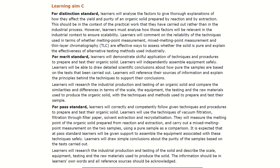The layout for this assignment is pretty much identical. We've got two pass criteria: P5 and P6. P5 is essentially do the practical — get a solid from it, get the melting point determined, be roughly decent. It's not going to be perfect. And likewise, don't be stupid in the lab, don't kill anyone, don't smash too many things.